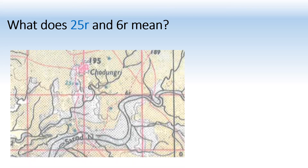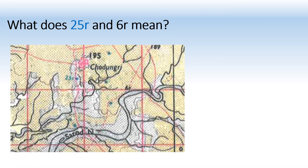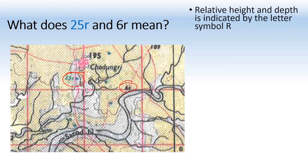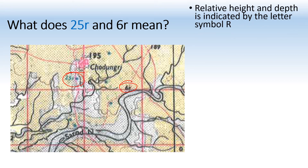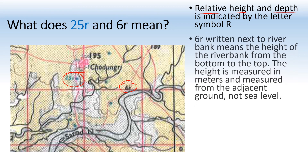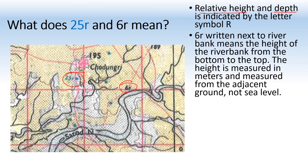What do 25R and 6R mean? This is relative height — or relative depth — indicated by the symbol R. 6R is written next to a river bank and shows the height of the river bank from bottom to top. The height is measured in meters from the adjacent ground, not from sea level. This is very important because everything we have learned before was from sea level, but this is from the surrounding ground.